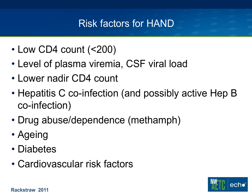Risk factors for HAND include low CD4 count — we look particularly hard when it's below 200 — and levels of plasma viremia, so if patients aren't suppressed or have higher viral levels, that's a risk factor, which correlates with CSF viral load. We also document the nadir CD4 count because that can predict development of neurocognitive deficits. Additionally, people with hepatitis C and active hepatitis B co-infection have a higher prevalence of HAND, as do methamphetamine users. Other risk factors include aging, diabetes, and cardiovascular risk factors.